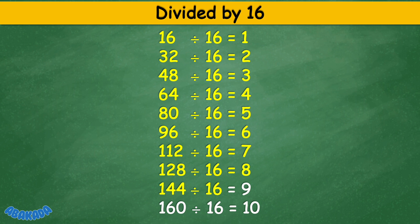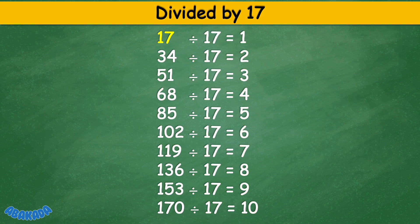Divided by 17: 17 divided by 17 equals 1, 34 divided by 17 equals 2, 51 divided by 17 equals 3, 68 divided by 17 equals 4, 85 divided by 17 equals 5, 102 divided by 17 equals 6, 119 divided by 17 equals 7, 136 divided by 17 equals 8, 153 divided by 17 equals 9, 170 divided by 17 equals 10.